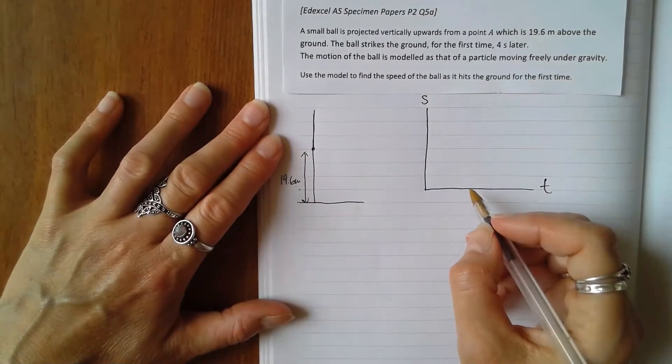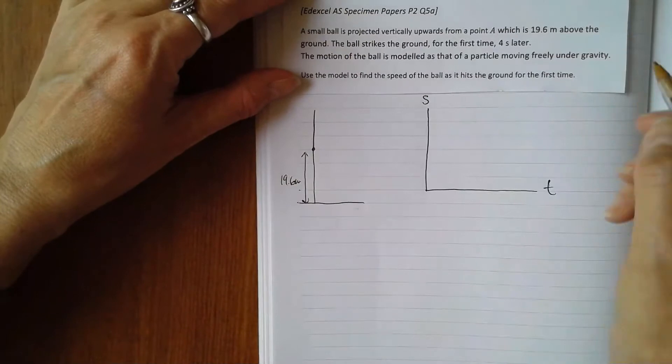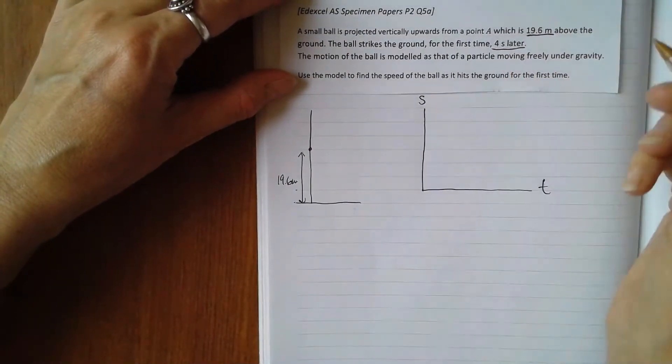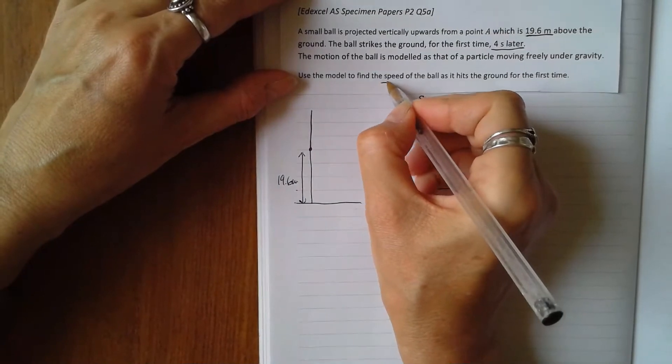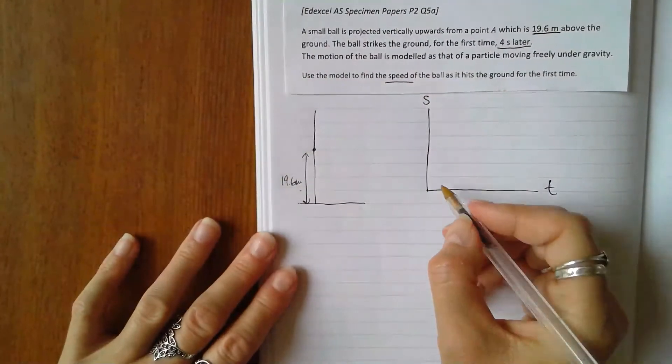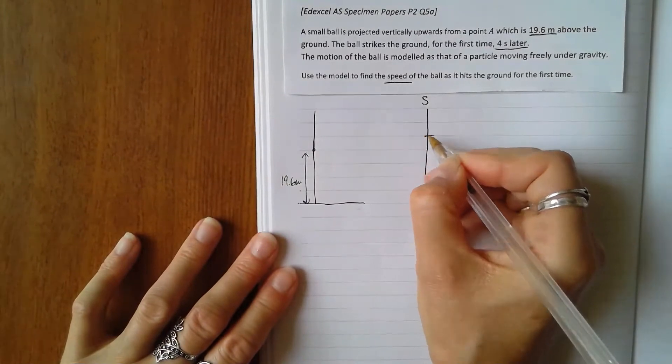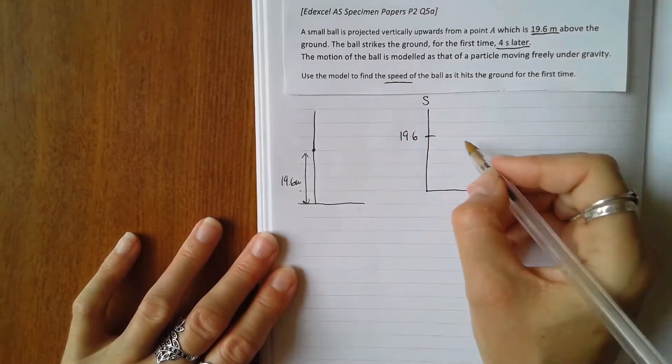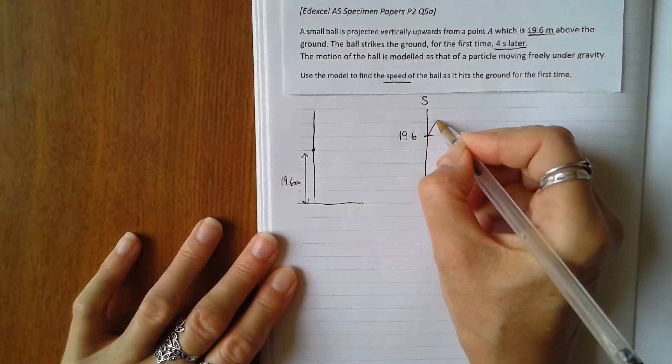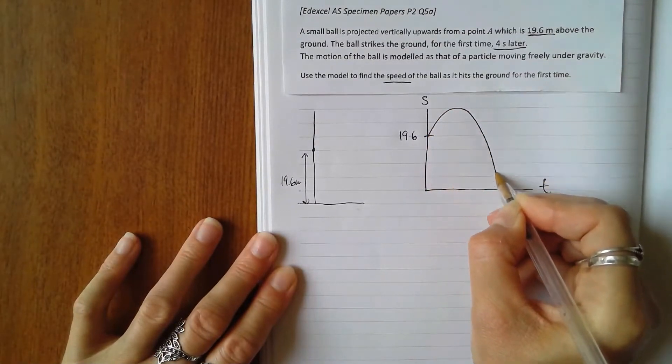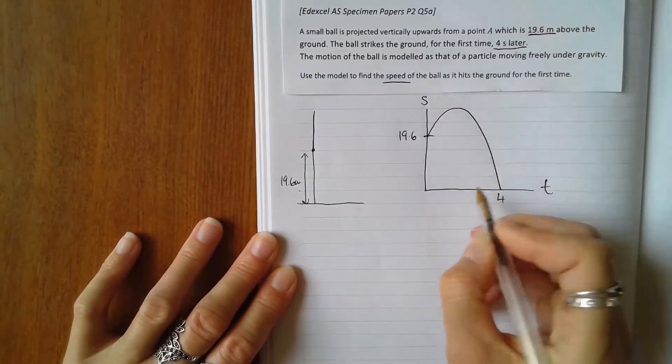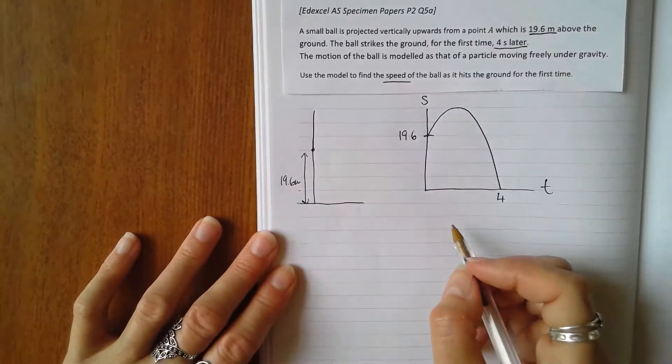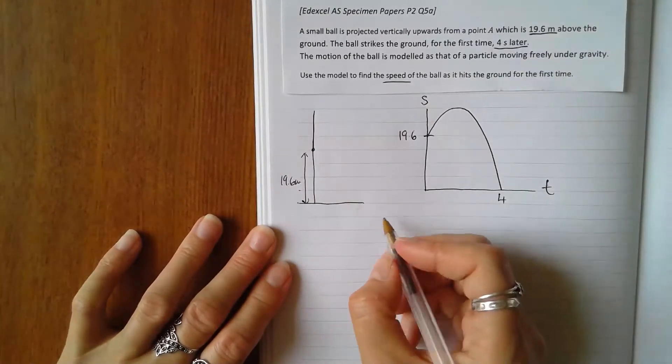In the question, the ball—and it's a good idea to underline the key points. It starts 19.6 meters above the ground, is projected upwards, and then hits the ground four seconds later, because time is moving on even though its motion is really like this.